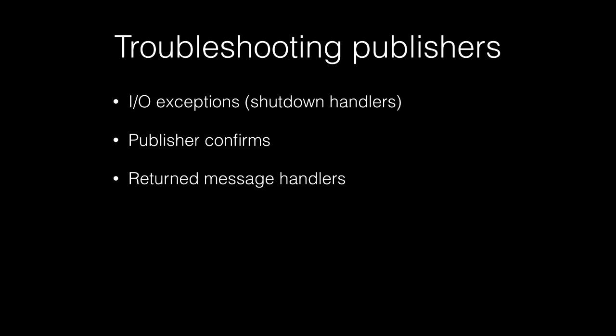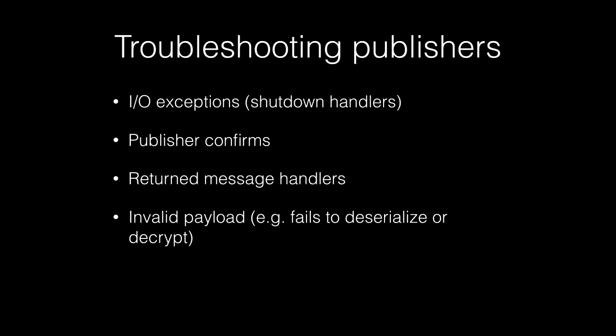What if a message does get to RabbitMQ but doesn't go anywhere from there — it's routed nowhere, it's voided? RabbitMQ has a feature that lets a publisher say, please return this message to me, and then I will do something with it. Also, your publishers can be publishing something that is invalid — for example, consumers cannot deserialize or decrypt it, or the format has changed between upgrades. Keeping track of payloads can yield a lot of interesting information.